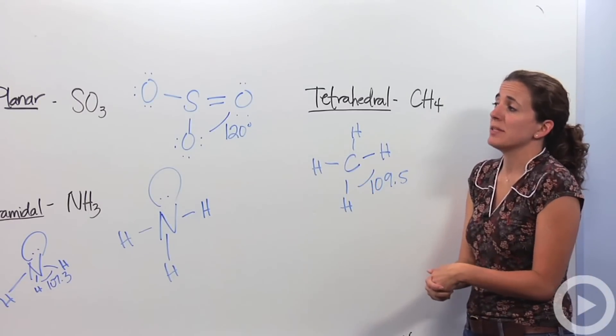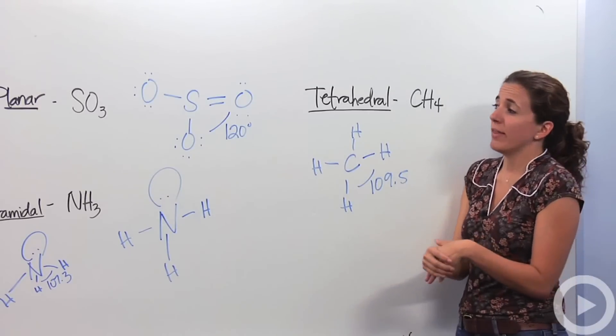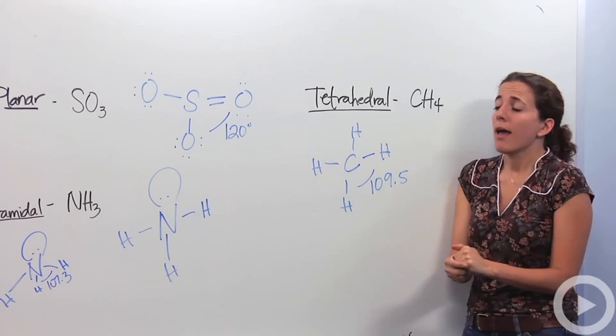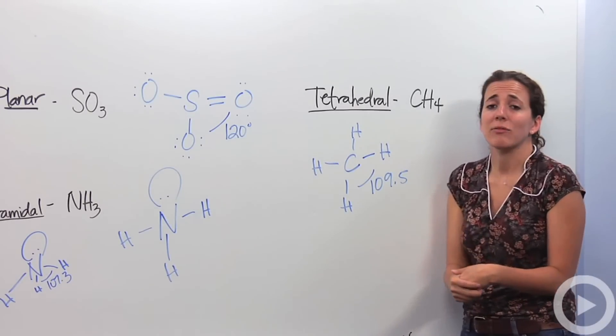So these are the five main shapes that you're going to see. Again, they're called VSEPR models, valence shell electron pair repulsion theory. And this is what covalent compounds look like in 3D.